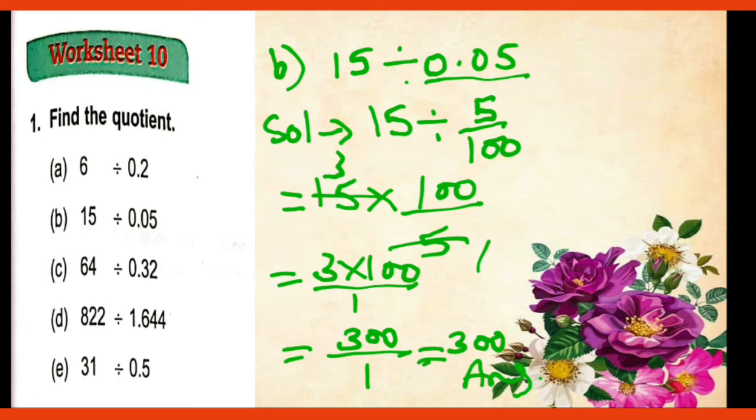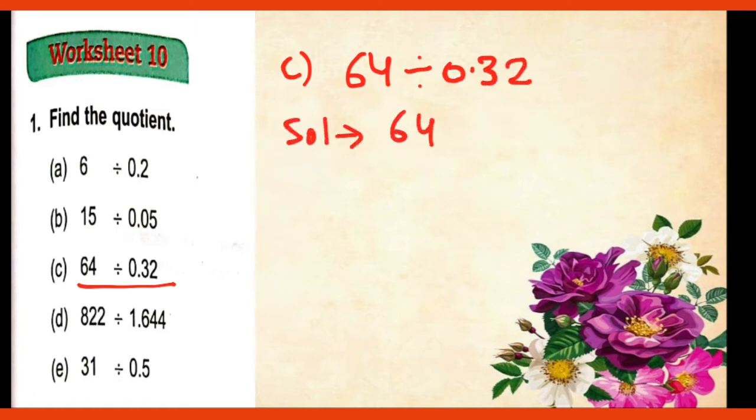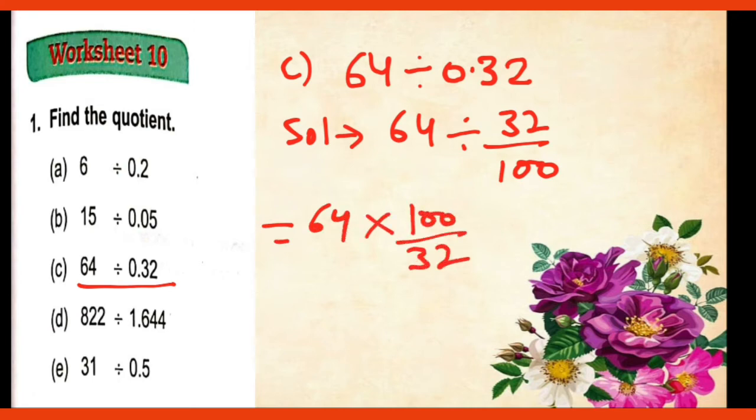So now we will do the next one is 64 divided by 0.32. So c part we have 64 divided by 0.32. So in solution what we will do 64 divided by 32 upon 100. Okay then 64 multiplied by 100 upon 32. Reciprocal we have taken.